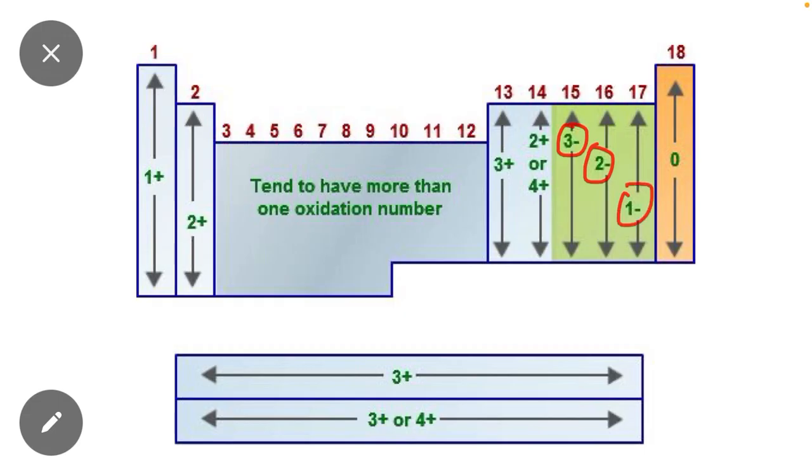Group 15, for example, nitrogen shows minus three oxidation state. From group 16, oxygen shows minus two oxidation state. From group 17, chlorine shows minus one oxidation state.